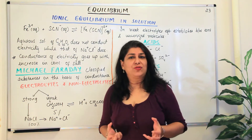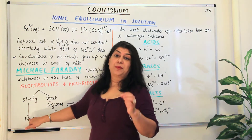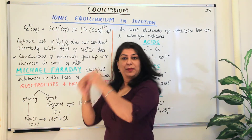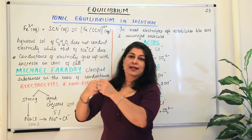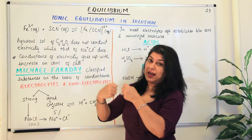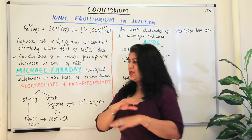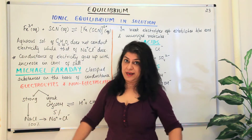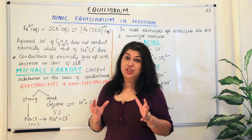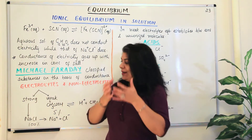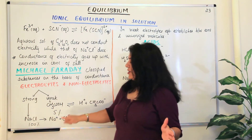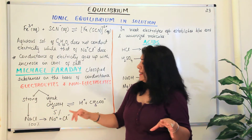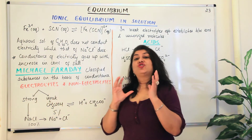Strong electrolytes are compounds like sodium chloride which dissociate completely in water. When you put them in water, every formula unit of the ionic compound breaks into ions and dissolves completely. Sodium chloride shows 100% ionization — that is, 100% dissociation — in water, resulting in the formation of free sodium and chloride ions which are free to conduct electricity. Such electrolytes are strong electrolytes.